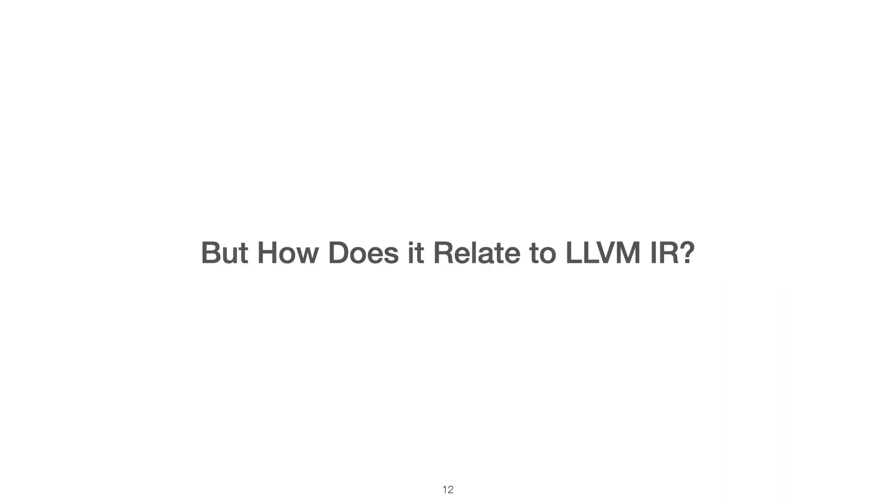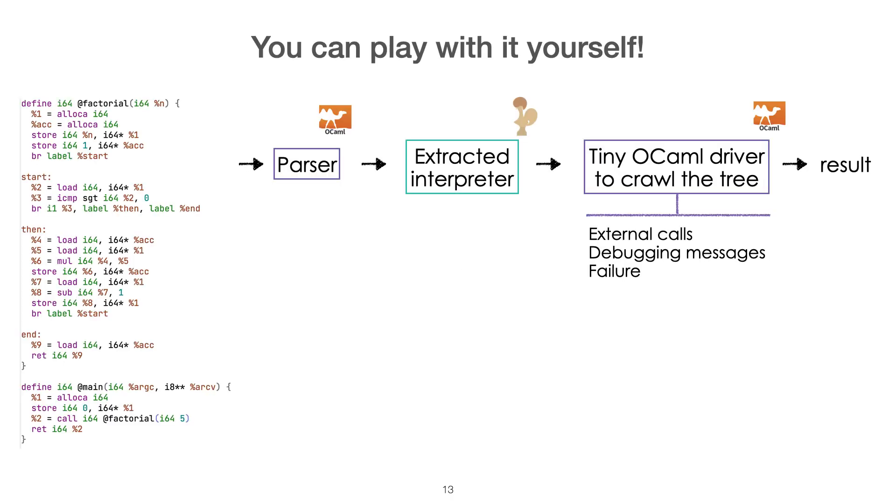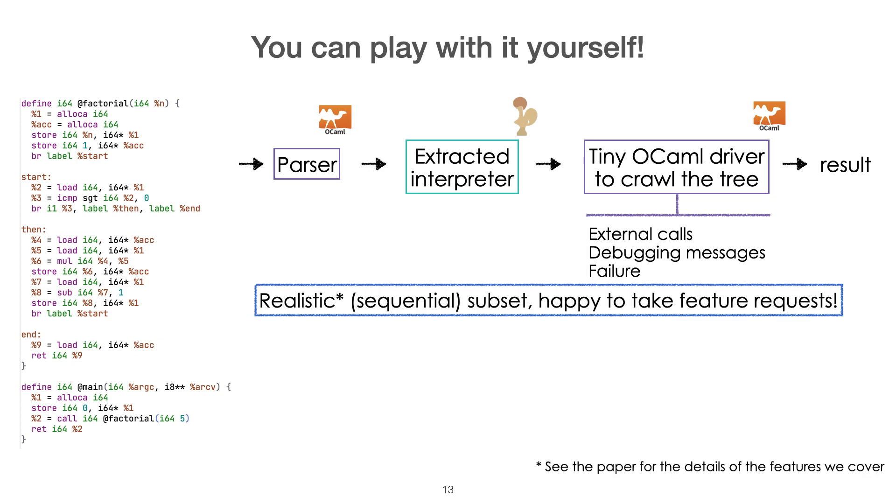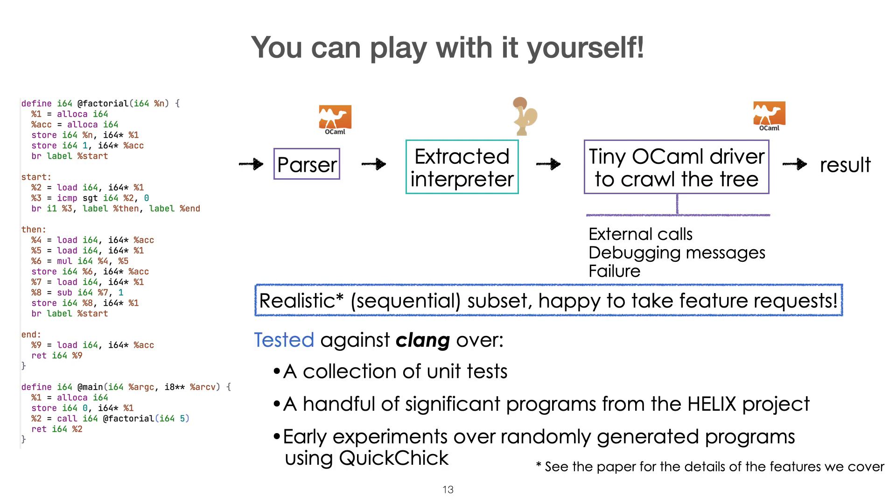At this stage, we have defined a formal semantics, but an important question is to ponder whether there is any relationship between these semantics and what we were interested in modeling, that is LLVM IR per se. Of course, to answer this question, we leverage this ease that we have to test because of this extracted interpreter, so we have an unverified parser that takes a valid LLVM IR syntax as input, feed it to the extracted interpreter, and finally feed the resulting tree to a tiny OCaml driver that will crawl the tree to extract the result. We cover a realistic sequential subset, and are of course happy to take feature requests. We have performed some differential testing against Clang, over a collection of manually written unit tests, a handful of significant programs that come from the front end, but also some randomly generated programs.